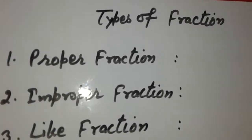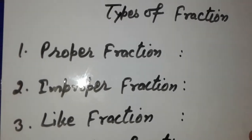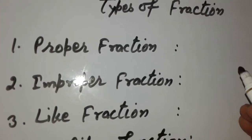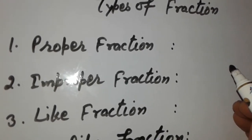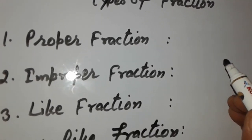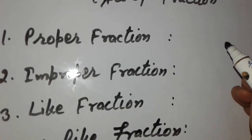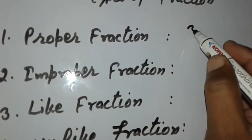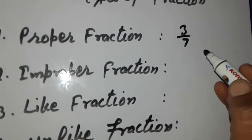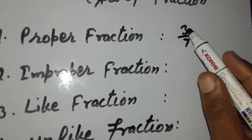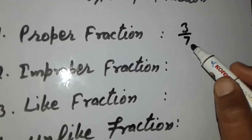Now, types of fractions. First, proper fraction. A proper fraction is a fraction where the numerator is less than the denominator. For example, three upon seven is a proper fraction because the numerator, three, is less than the denominator, seven.